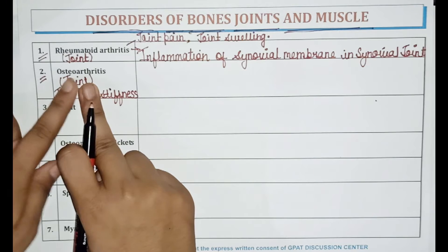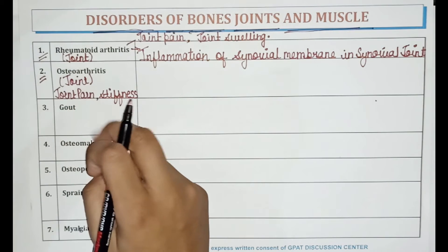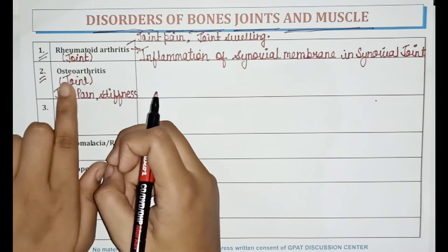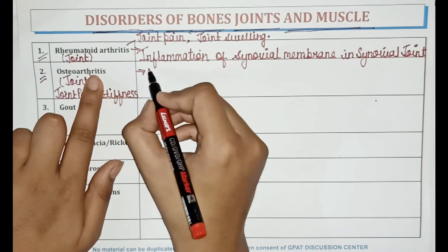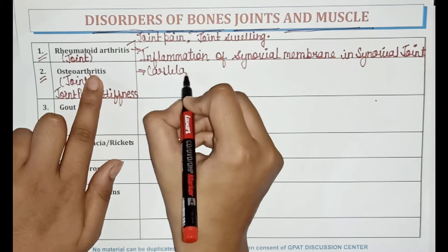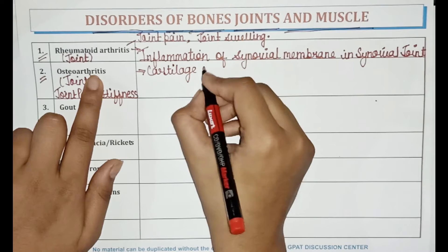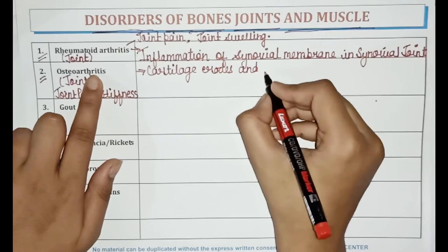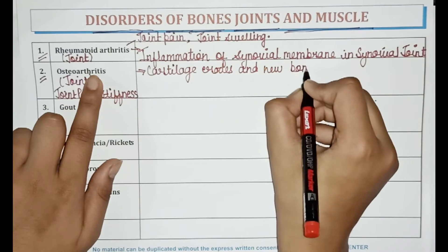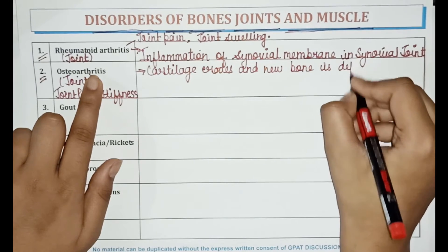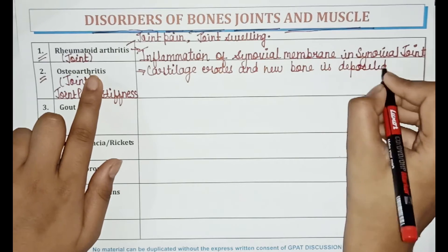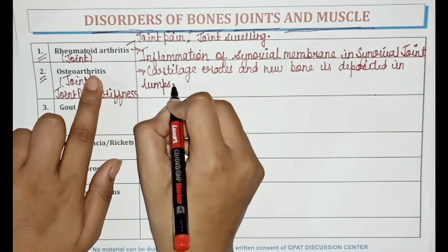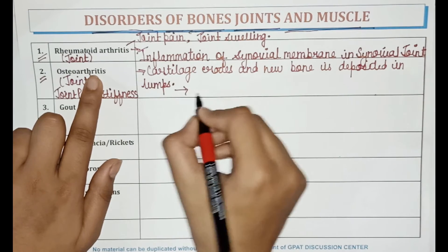In osteoarthritis, cartilage erodes and new bone is deposited in lumps, which makes movement difficult and finally impossible. This makes movement progressively harder over time.